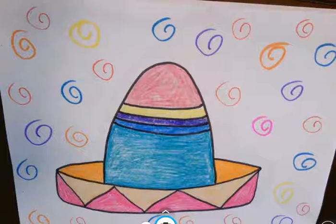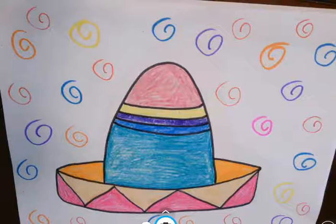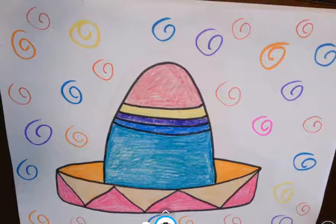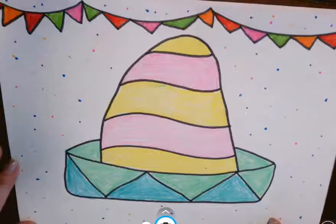Hey guys, today we are going to make a sombrero. Here's an example of one with different color swirlies all around that you could make. Here's another example of a sombrero you can make with little banner on the top and confetti all around. It's up to you how you decorate it.